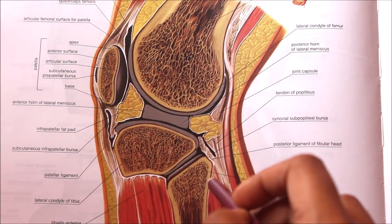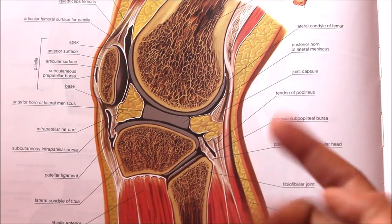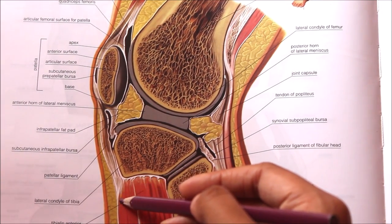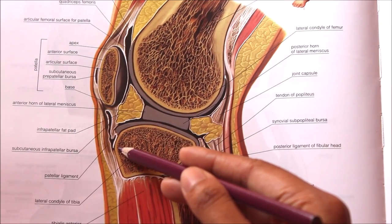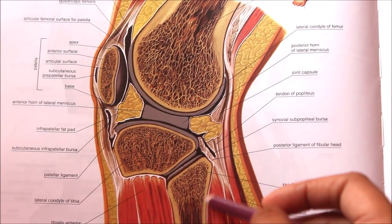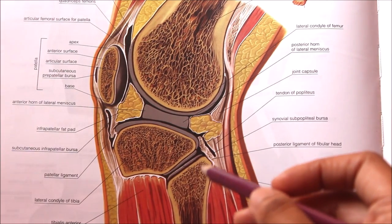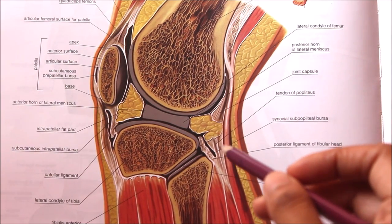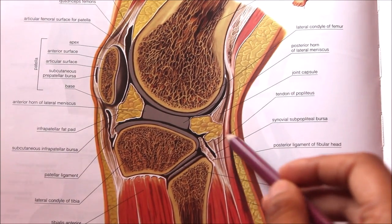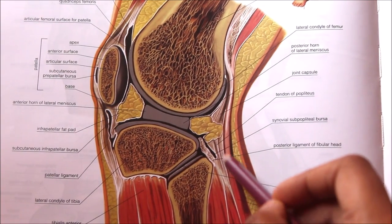The tibial attachment of the fibrous capsule is attached about half to one centimeter beyond the articular margin, with three special features: anteriorly it descends along the margins of the condyles to the tibial tuberosity where it is deficient, posteriorly it is attached to the intercondylar ridge, and posterolaterally there is a gap beyond the lateral condyle for the passage of the tendon of the popliteus.